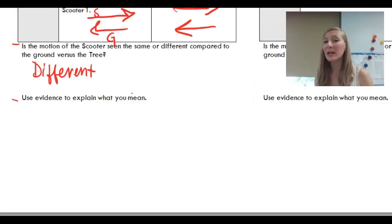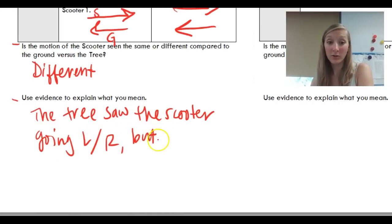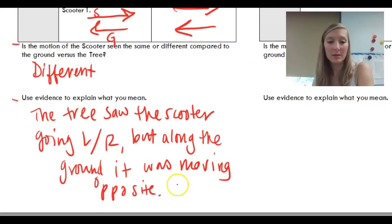So what evidence? Well, you could have written something about how when you looked at the ground, it was going opposite or parallel but different direction, but when you looked at the tree, it was going in a left or right direction. So if it were me, I'd write something down like: the tree saw the scooter going left or right, but along the ground it was going opposite the motion of the ground. So that's kind of your first evidence.